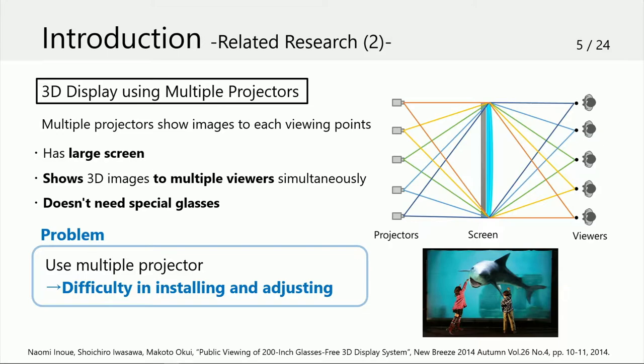On the other hand, here is a 3D display which realizes a large screen. This method uses multiple projectors. The display shows 3D images by the projectors showing images to each viewing point. Thus, this display realizes a large screen. However, there is a problem of difficulty in installing and adjusting.